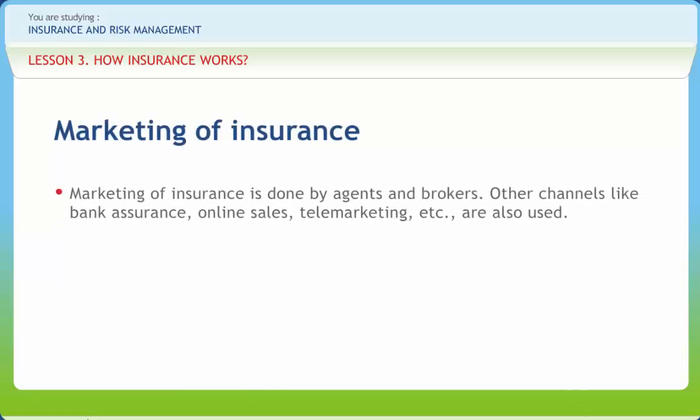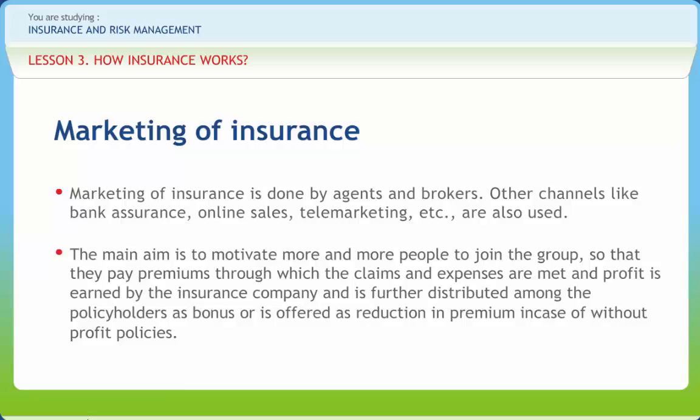Marketing of insurance is done by agents and brokers. Other channels like bank assurance, online sales, telemarketing etc. are also used. The main aim is to motivate more and more people to join the group, so that they pay premiums through which the claims and expenses are met and profit is earned by the insurance company, and is further distributed among the policyholders as bonuses or offered as reduction in premium in case of without-profit policies. Certain risks are not taken up by insurance companies like war risk on land, deliberate losses, nuclear risk etc. Some losses are more certain, like wear and tear of machinery, damage of perishable goods, delay in transit of cargo, and hence are not insured. But as times change, risks which are not insurable at one time may become insurable in the future.